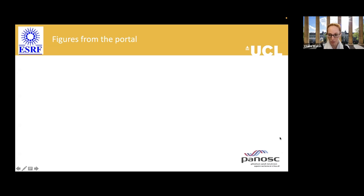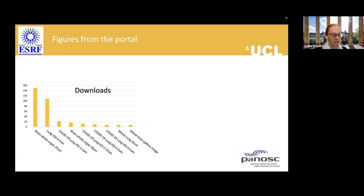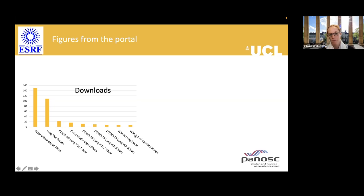Looking at some figures from the portal: there are about 50 datasets currently uploaded, and these are the download counts. By far the most downloaded is the whole brain organ, which accords with the interest from collaborators. Interestingly, one of the lung volumes of interest at 6.5 micrometer resolution — an intermediate resolution — is the next most downloaded, though the reason isn't entirely clear.